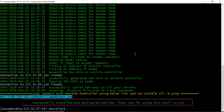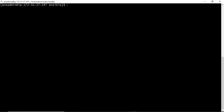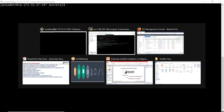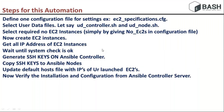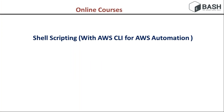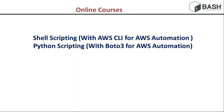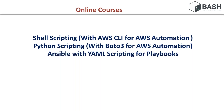This is one real-time requirement — the concepts are similar to production use cases. This type of training is provided by our institute, Do With Python Technologies. We offer online courses covering shell scripting, AWS CLI commands inside shell scripting, Python scripting, AWS automation using Boto3, Ansible with YAML scripting for playbooks, and infrastructure as code with Terraform for AWS cloud.